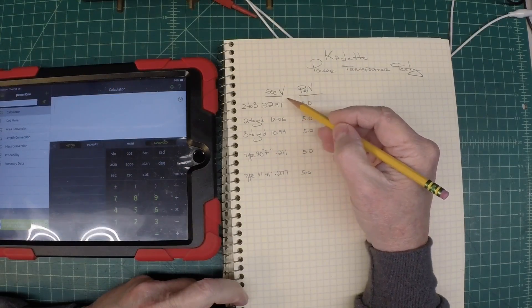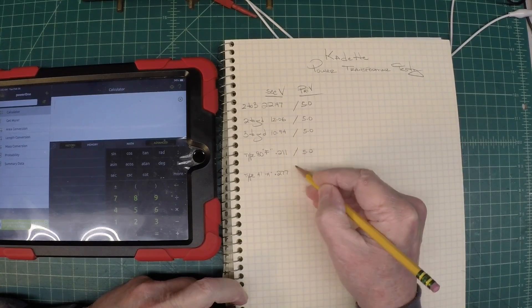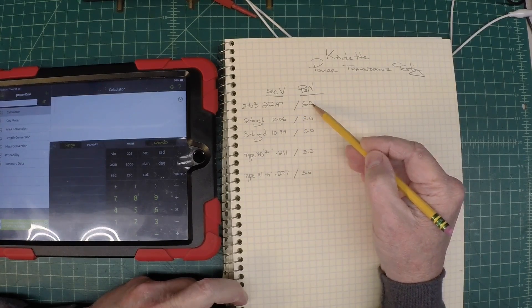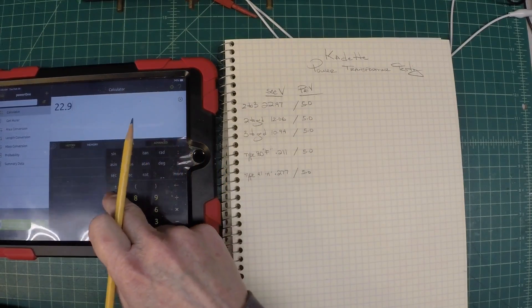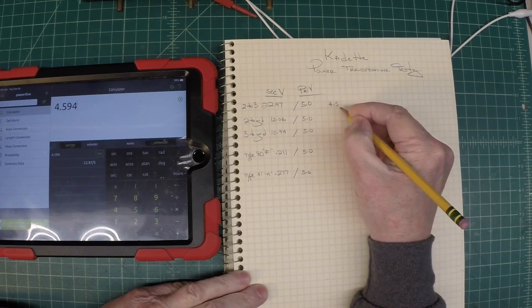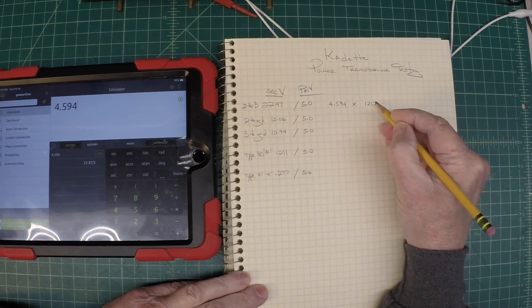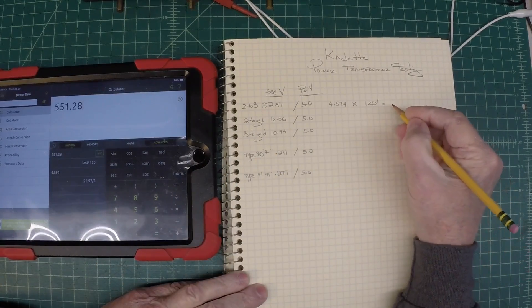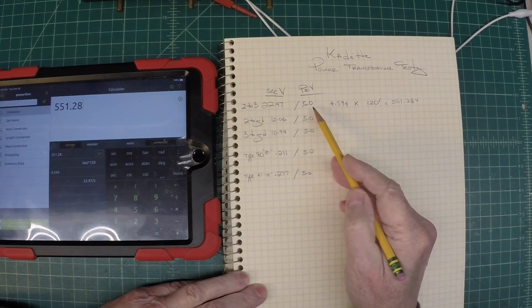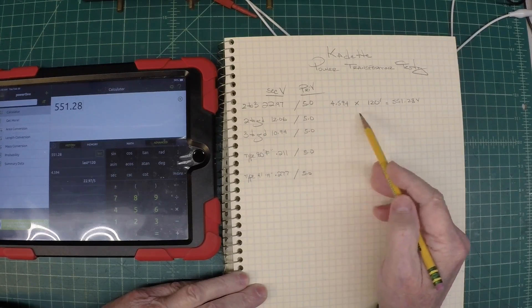You can see we've got all the secondary voltages in the left column. We'll take the secondary voltage and divide it by our input of five volts. We'll start with 22.97 divided by five, which gives us a ratio of 4.594. I can take that and multiply it by my modern day line voltage of 120 volts, which gives us about 551.28 volts on the secondary between pins two and three of the power transformer. Let me work through the rest of these real quick.